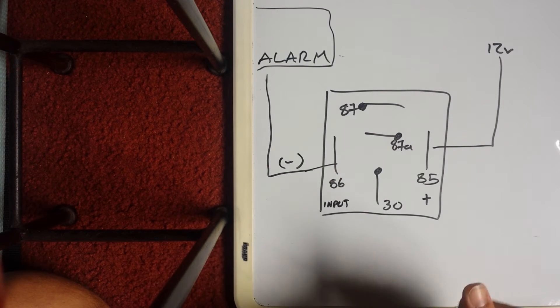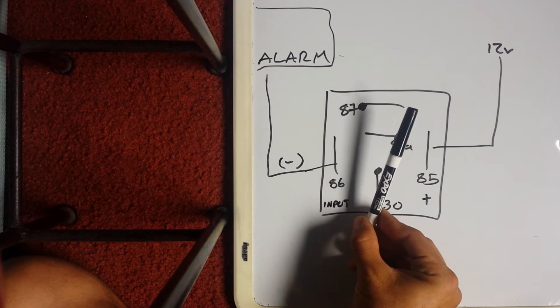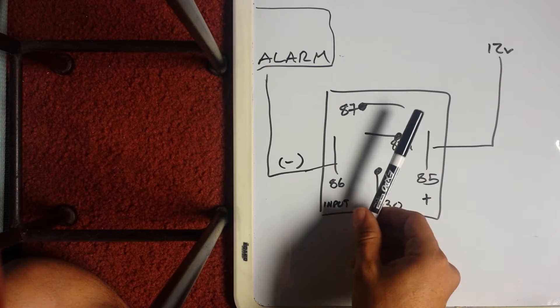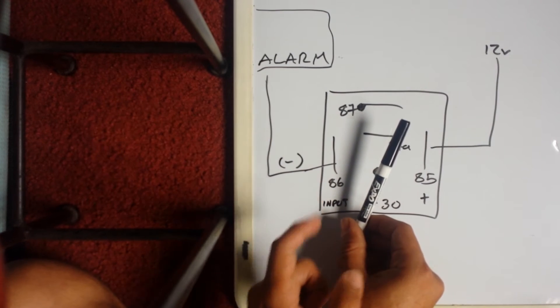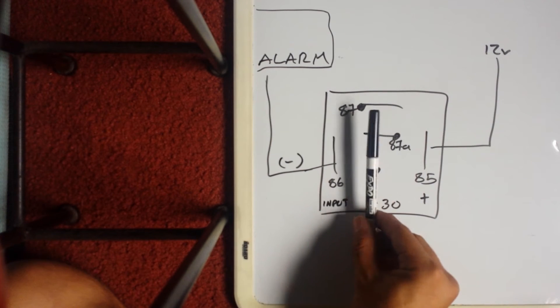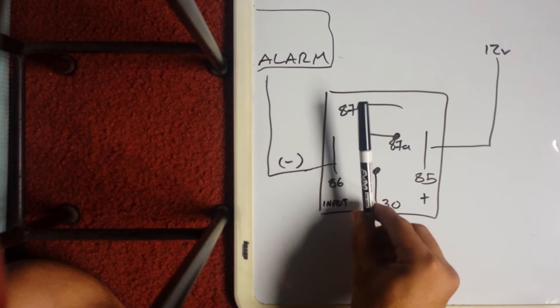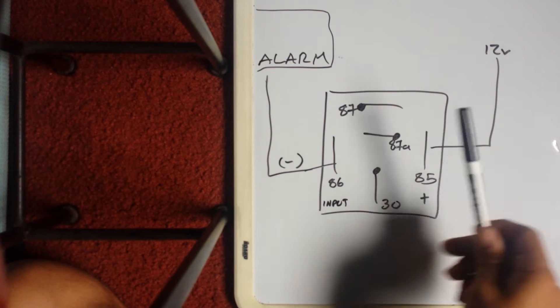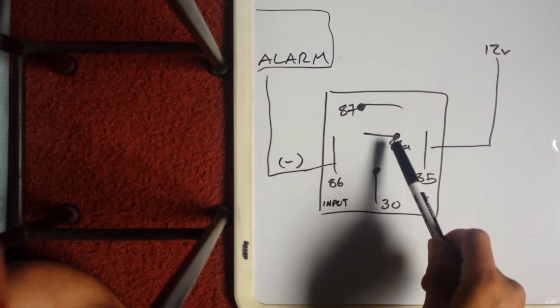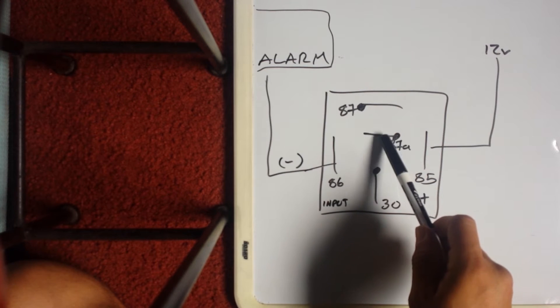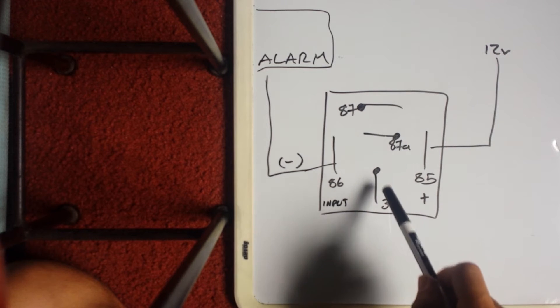30 is resting on 87a and every time the alarm goes off it's going to send a pulse and this guy's going to be clicking to 87, from 87a to 87. Remember continuity when it clicks.